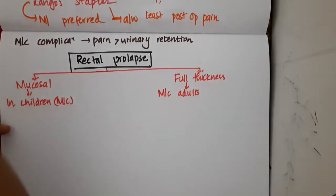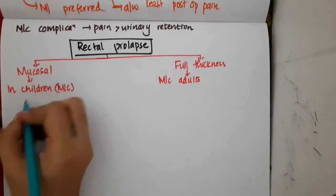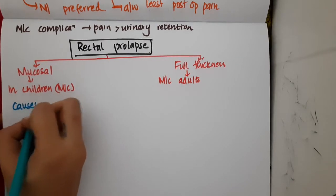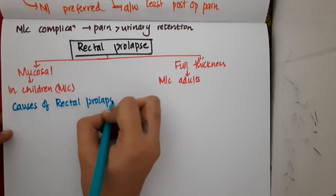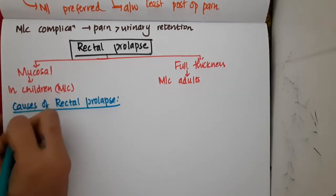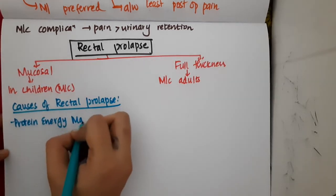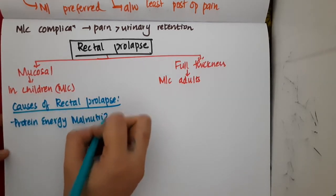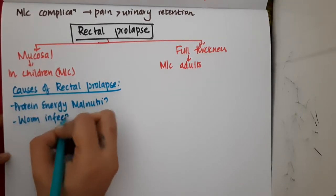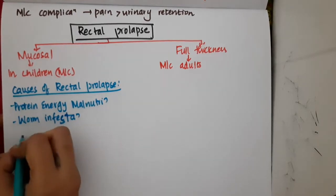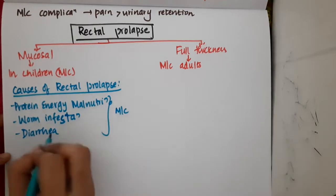If you are asked about the causes of rectal prolapse, the causes include: protein-energy malnutrition, worm infestation, and diarrhea. These are the most common causes.